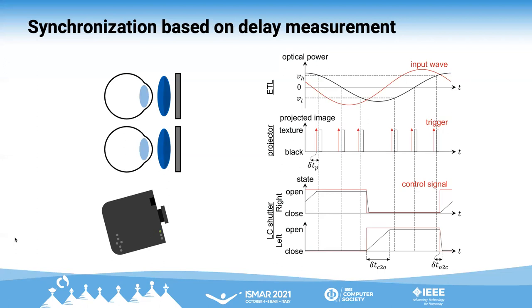To synchronize the ETL's active shutter glasses and the projector, we measure the delays from the input signals. The ETLs are modulated by the same sinusoidal wave. The projector is triggered at the desired optical power of the ETLs.